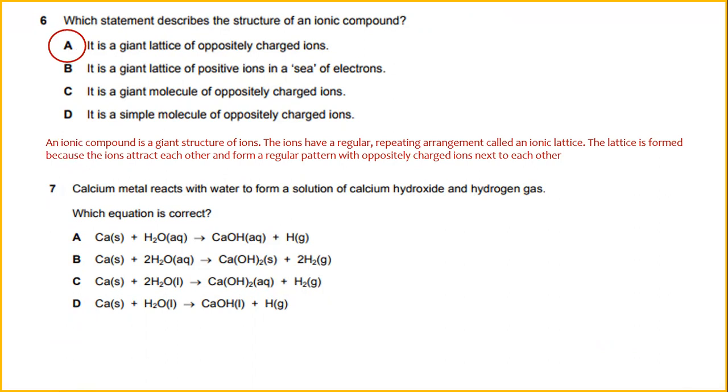Calcium metal reacts with water to form a solution of calcium hydroxide and hydrogen gas. Which equation is correct? Calcium reacts with liquid water to produce aqueous calcium hydroxide and hydrogen gas. Ca in solid form mixed with H2O in liquid form to form hydrogen gas H2 and solution of calcium hydroxide Ca(OH)2. So the answer would be C.